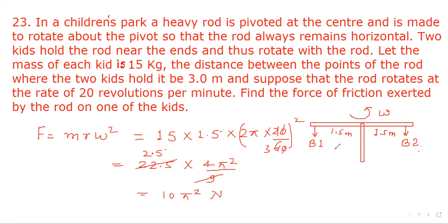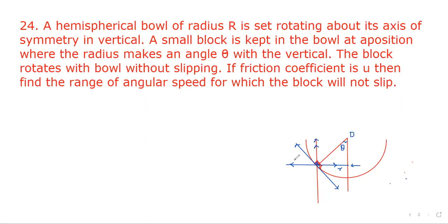Now let's go to the next question. A hemispherical ball of radius R is set rotating about its axis of symmetry in the vertical. A small block is kept in the ball at a position where the radius makes an angle theta with the vertical. The block rotates with the ball without slipping. If the friction coefficient is μ, find the range of angular speed for which the block will not slip.